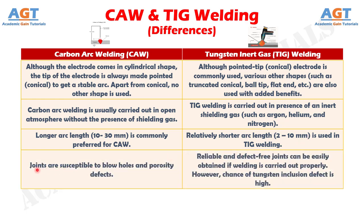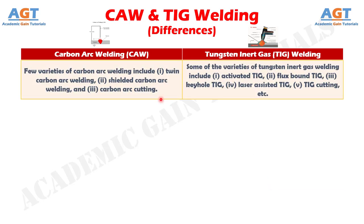Number 9: In carbon arc welding, joints are susceptible to blow holes and porosity defects, whereas in TIG welding, reliable and defect-free joints can be easily obtained if welding is carried out properly; however, the chance of tungsten inclusion defect is high. Difference number 10: Few varieties of carbon arc welding include twin carbon arc welding, shielded carbon arc welding, and carbon arc cutting. Whereas varieties of TIG welding include activated TIG, flux-bound TIG, keyhole TIG, laser-assisted TIG, and TIG cutting.